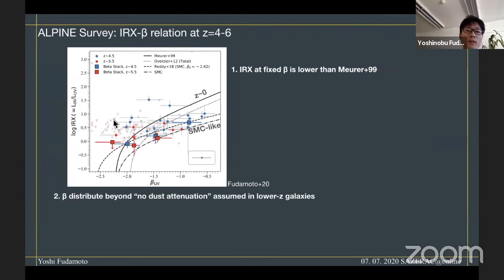These filled points are individual detections and downward triangles are three-sigma upper limits, and squares are the stacking analysis for which I used both detections plus non-detections. Blue is redshift 4.5 galaxies and red is redshift greater than 5 galaxies. First thing is that these individual detections and stacking analysis show that these galaxies have relatively lower IRX values.